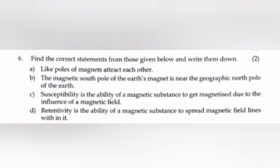Question 6. Find the correct statements from those given below and write them down. A. Like poles of magnet attract each other. B. The magnetic south pole of earth's magnet is near the geographical north pole of the earth. C. Susceptibility is the ability of a magnetic substance to get magnetized due to the influence of a magnetic field. D. Retentivity is the ability of a magnetic substance to spread magnetic field lines within it. Answer: B and C.